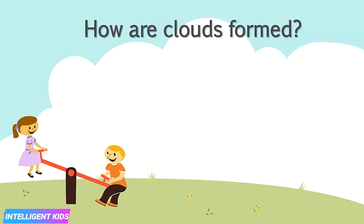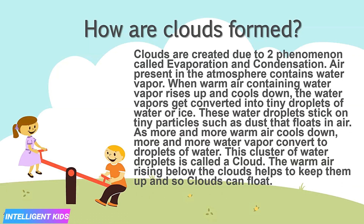Now I will be telling you how clouds are formed. Clouds are created due to two phenomena called evaporation and condensation. Air present in the atmosphere contains water vapor. When warm air containing water vapor rises up and cools down, the water vapor gets converted into tiny droplets of water or ice. These water droplets stick on tiny particles such as dust that floats in the air. As more and more warm air cools down, more and more water vapor converts to droplets of water. This cluster of water droplets is called a cloud. The warm air rising below the clouds helps to keep them up, and so the clouds can float.